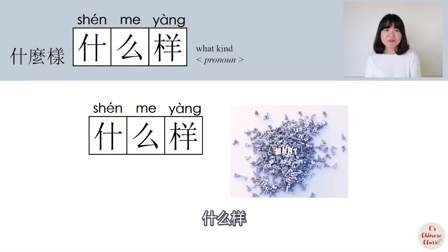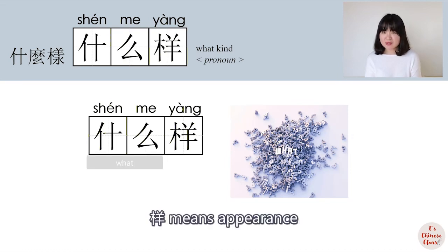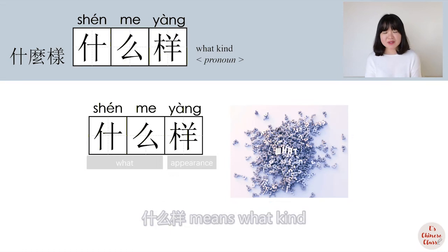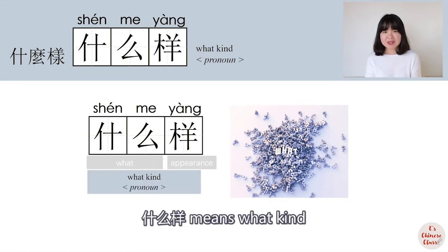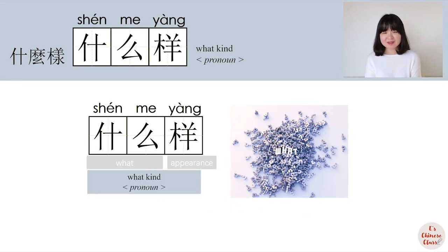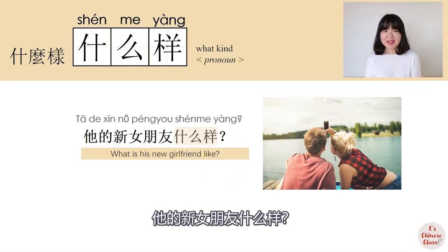什么样? 什么 means 'what', 样 means 'appearance', so 什么样 means 'what kind?' For example: 他的新女朋友，什么样? — What is his new girlfriend like?